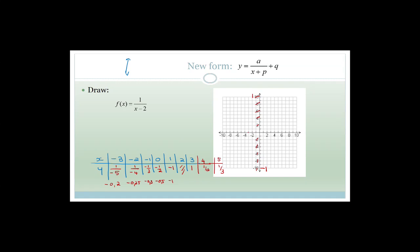When x is minus three, y is going to be minus 0.2, sitting over here. When x is minus two, y is minus 0.25. When x is minus one, y is minus a third — about minus 0.33. When x is zero, y is minus 0.5. When x is one, y is minus one. So this graph is doing that, approaching the asymptote at x equals two.